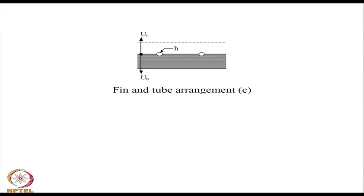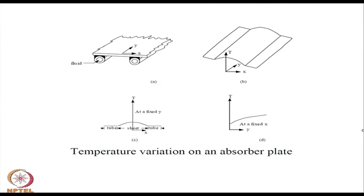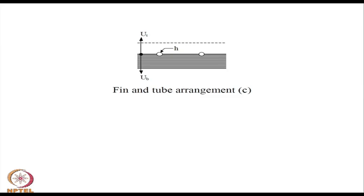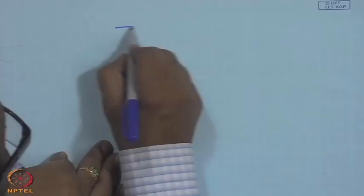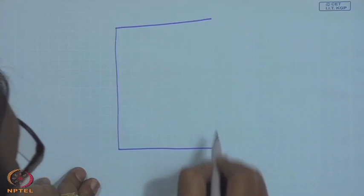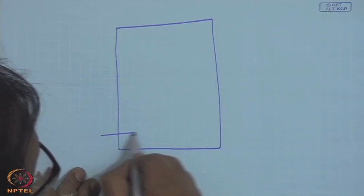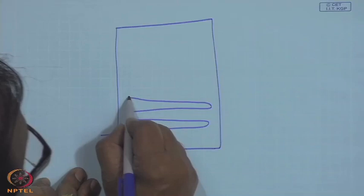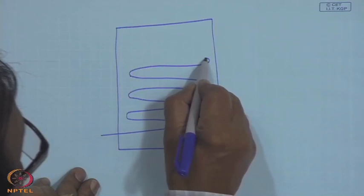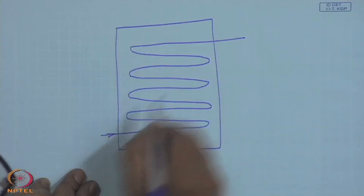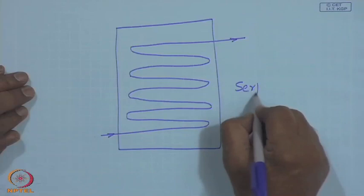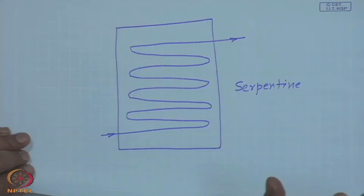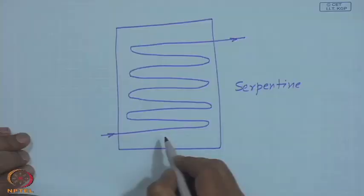These are the fin and tube type of absorbers, with the tube arrangement being slightly different from one to the other. Each one has its own advantage or disadvantage, and the expressions will differ slightly. The performance may not be all that much different from one to the other — it is a question of manufacturing convenience. You can also think of other configurations: you may have the entire absorber plate with a serpentine tube arrangement soldered or welded to the absorbing plate. The fluid at low temperature enters here and leaves there. The difference between this and the earlier configurations is that the total flow rate is divided equally among the number of tubes in the parallel arrangement, whereas in the serpentine case the entire flow goes through one tube. This may lead to a higher pressure loss, though there may be some other advantage in terms of heat exchange.